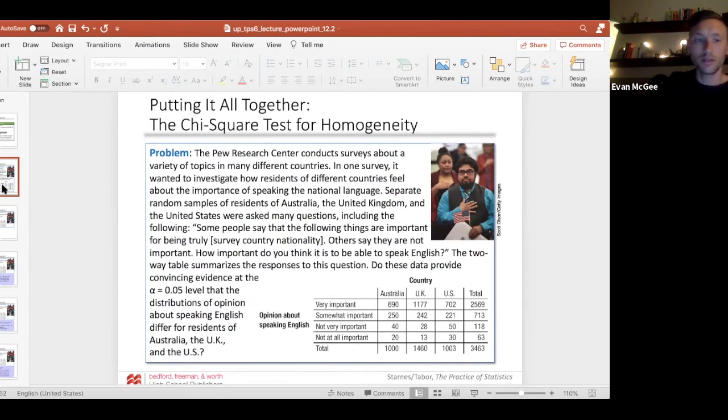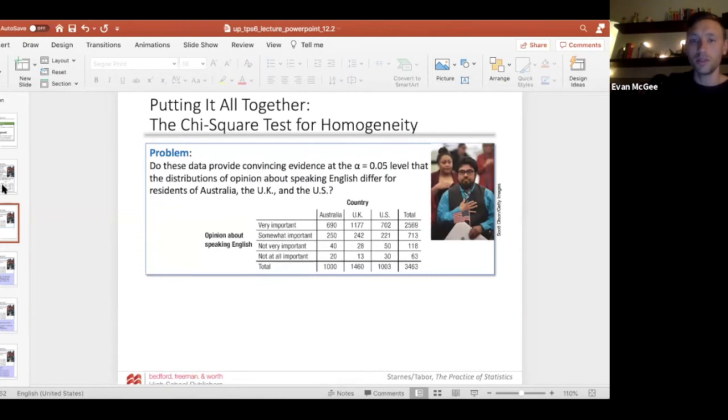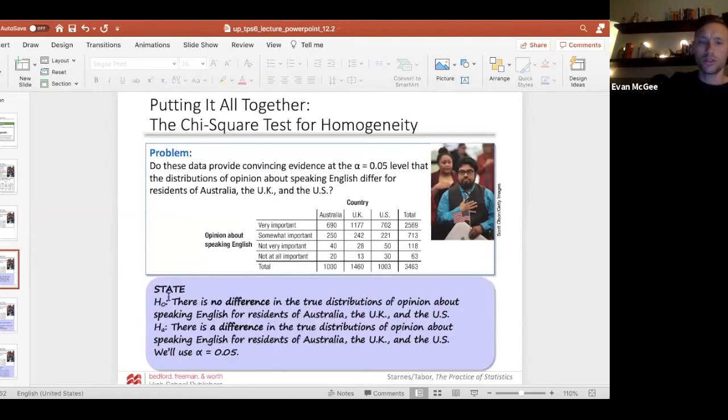So first we're going to look at what would the appropriate hypotheses be in the state section. For every chi-square test of homogeneity, we say that there is no difference. So H₀: There is no difference in the true distribution of opinion about speaking English for residents in the three different countries. Hₐ: There is a difference in the true distribution of opinion about speaking English for the three different countries. The alternative is not saying that all three are different, just that at least two in this case are different. So that's our state section. List your hypotheses, there is no difference, there is a difference, and then the context.